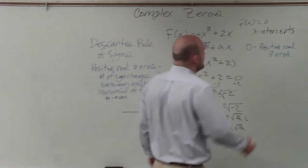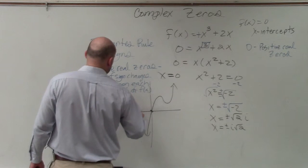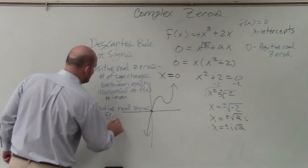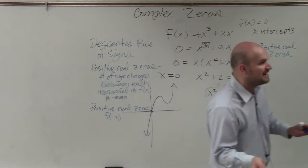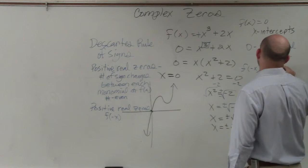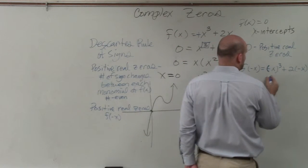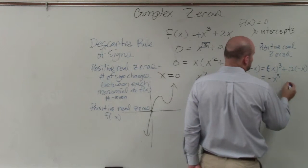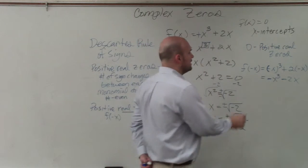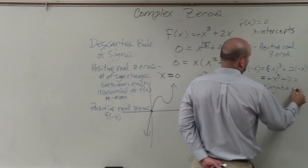Then to find the negative real zeros, it's the same thing, except you're going to do f of negative x. Remember we did f(x), f of negative x, like for even and odd? So let's do f of negative x equals negative x cubed plus 2 times negative x. So now just go ahead and simplify this. And what you get is negative x cubed minus 2x, OK? So therefore, there's zero negative real zeros.